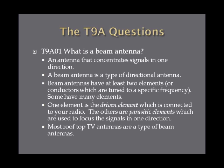What is a beam antenna? The answer is an antenna that concentrates signals in one direction, making a beam antenna a type of directional antenna. What makes a beam antenna directional is that it needs to have at least two elements — a conductor tuned or cut to a specific frequency so it resonates at a certain frequency. Some beam antennas have many elements, but it needs at least two to give it its directional capability.